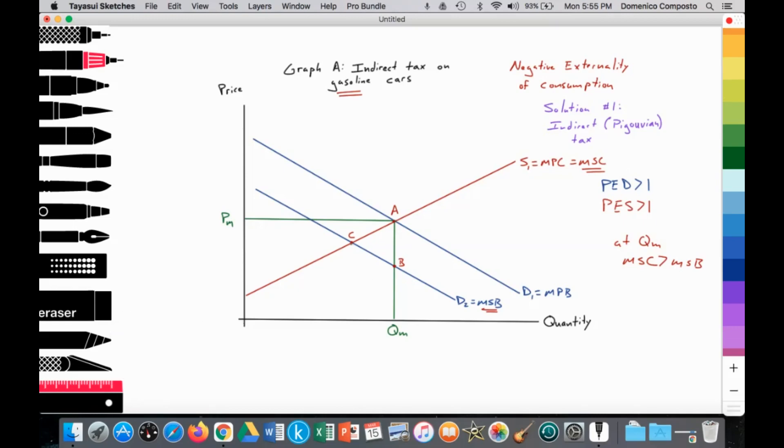So that social optimum appears at the intersection of S1 and D2, providing the optimal price at P-opt and the optimal quantity at Q-opt. So we have just drawn a negative externality of consumption.